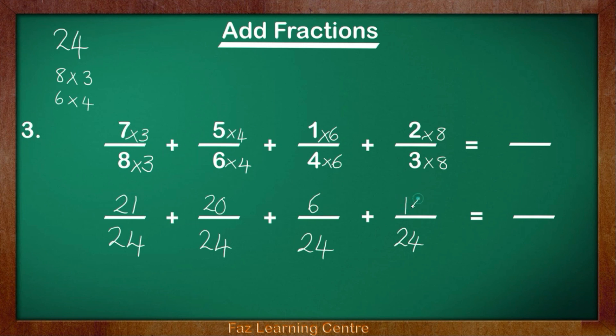Now we are quickly going to add these up. 21 add 20 is 41. 41 add 6 is 47. 47 add 10 is 57. 57 add 6 is 63. 63 over 24. You may have realized that 63 over 24 is also an improper fraction.